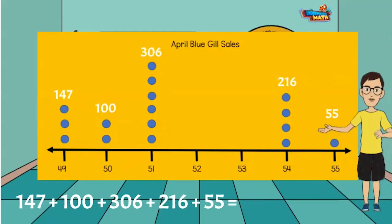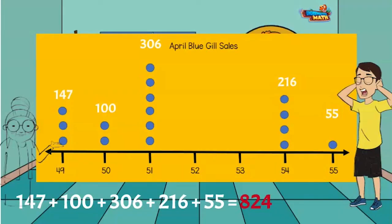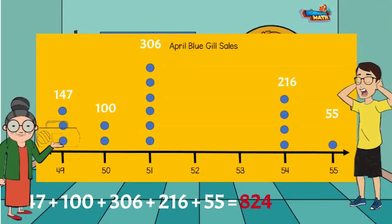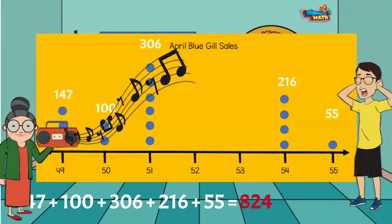The grand total is — where'd she go now? Anyway, the total amount of bluegill fish sold in April is 824. Where did you go? I went to go find some blues music. I always like to listen to that while I'm counting the amount of bluegill sold.